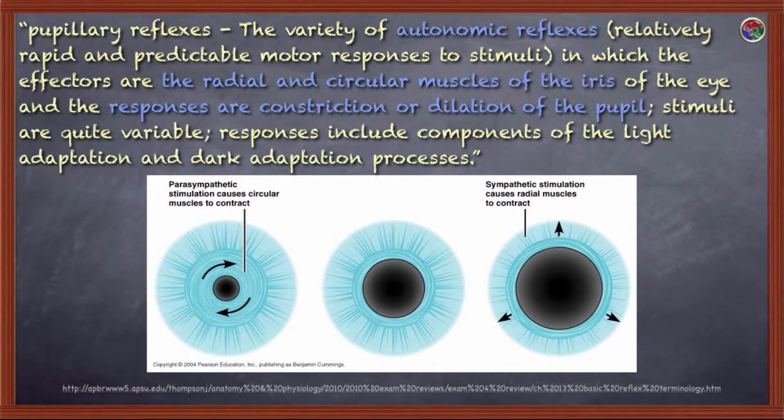Autonomic reflexes in which the radial and circular muscles of the iris and the responses are constriction or dilation of the pupil as they adjust to changes in light level. These actions are shown in the illustration which accompanied the quote.